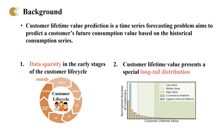The first is the data sparsity issue. In the early stage of a customer's life cycle, the customer's historical data is limited. The second is the special long-tail distribution of customer lifetime value.